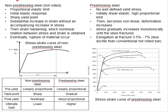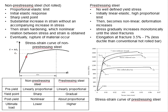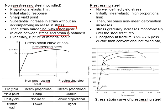In general, the non-prestressing steel has a clear proportional elastic limit. It is normally initiated with an elastic response. There is a sharp yield point, and after the yield point there will be a significant increase in strength without a large increment of strain. This stage is known as strain hardening, which gives a non-linear relation between stress and strain.